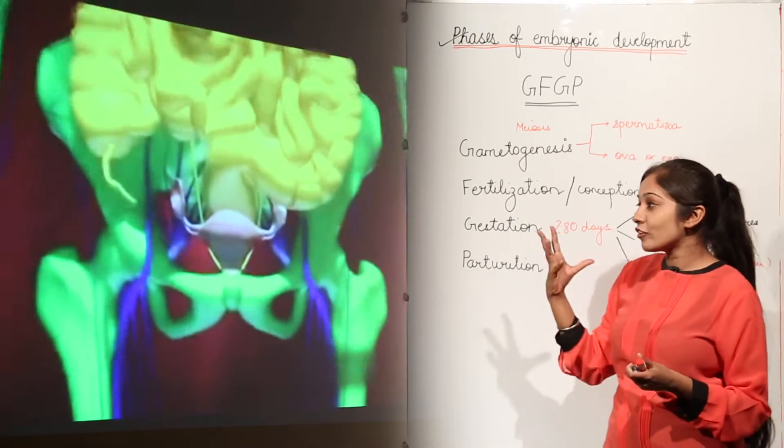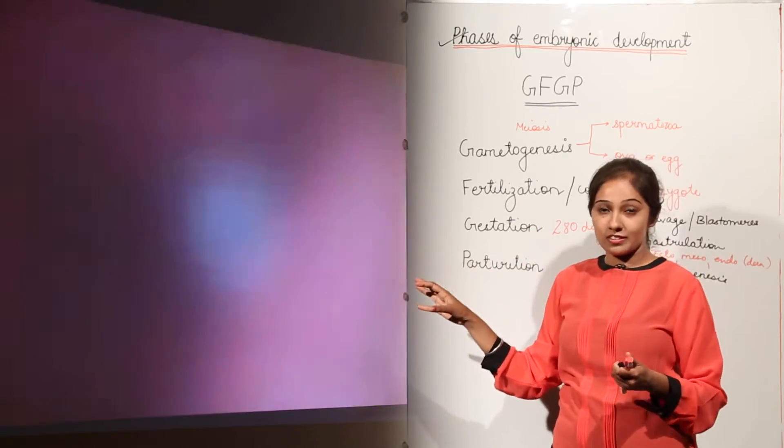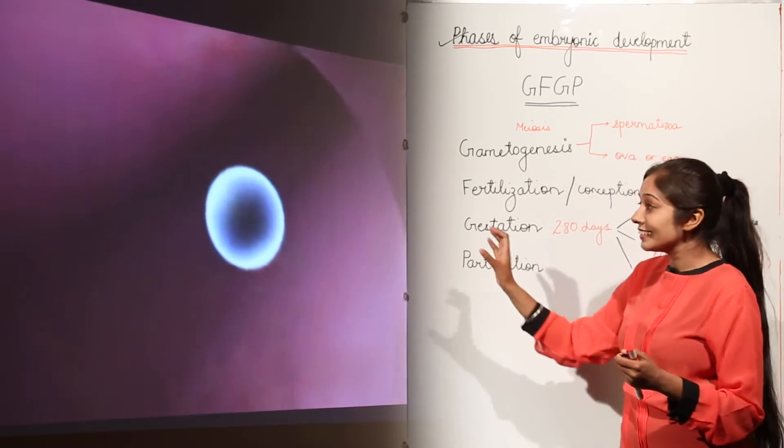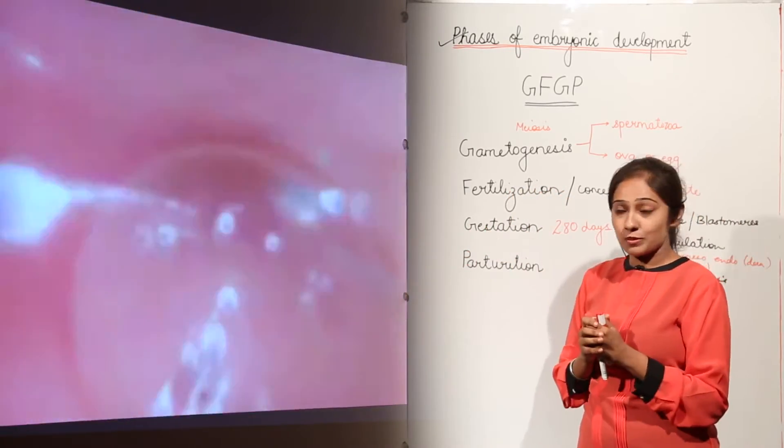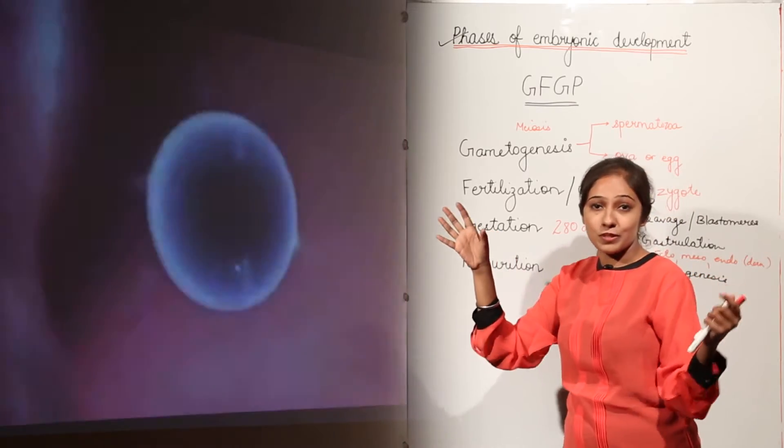As you know that the site for fertilization is the fallopian tubes in human females. This is an egg. Now this egg is going to fuse with sperms. You know that there are millions of sperms.